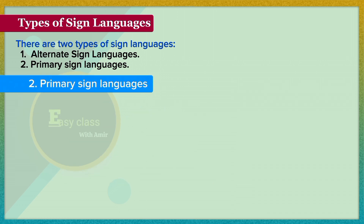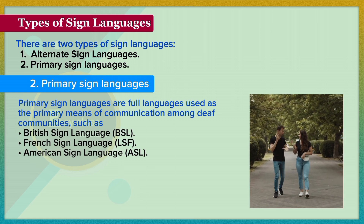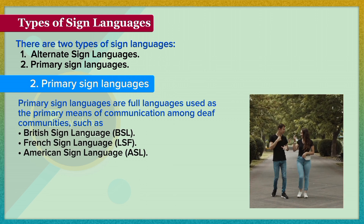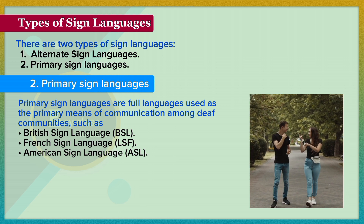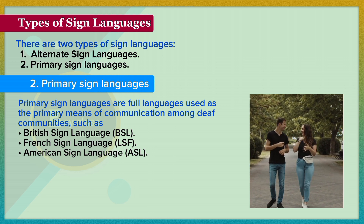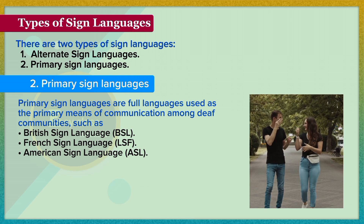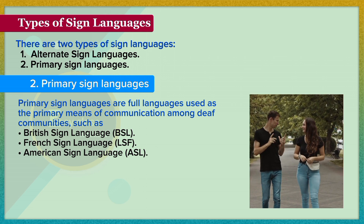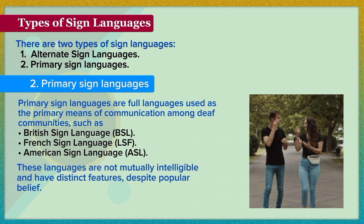Primary sign languages are full languages used as the primary means of communication among deaf communities, such as British Sign Language (BSL), French Sign Language (LSF), and American Sign Language (ASL). These languages are not mutually intelligible and have distinct features, despite popular belief.